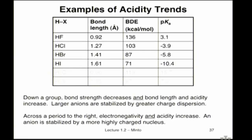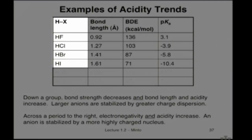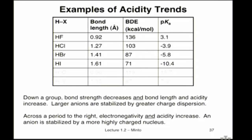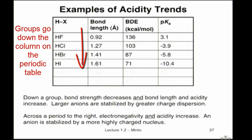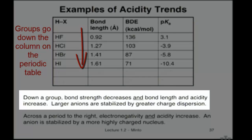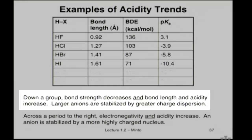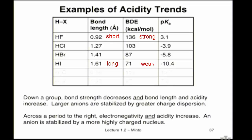To connect to the last lecture, we talked about some of the acidity trends with directly attached atoms. Here you have a situation where you're going to transfer a proton attached to a halogen, and that halogen could be anything from fluorine through iodine. The trend for this group series, going down a column on the periodic table, is that as the bond length increases and the bond strength decreases — an HF bond is strong and short, an HI bond is long and weak — as the bonds get longer and weaker, the acidity increases.